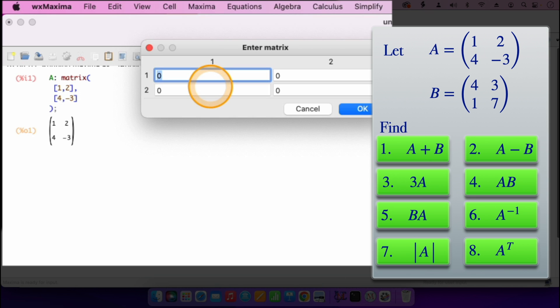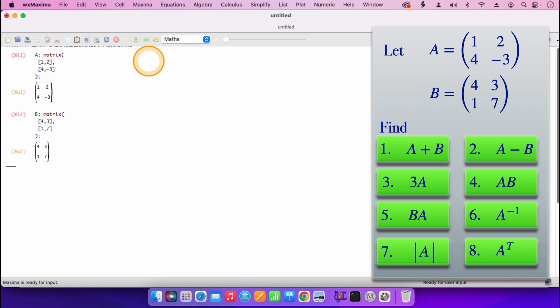Click on enter, then for the entries of B, we have a four, a three, a one, and a seven. Then I click on enter.